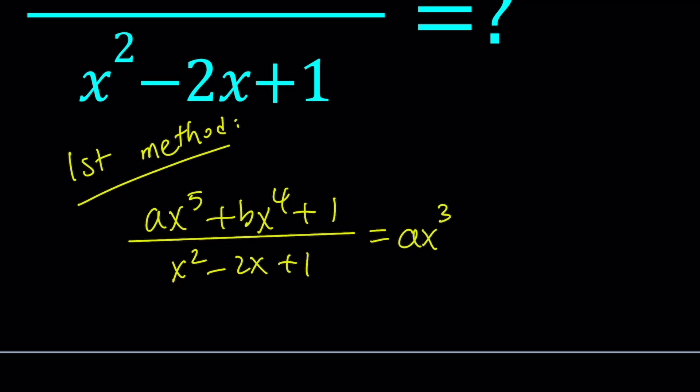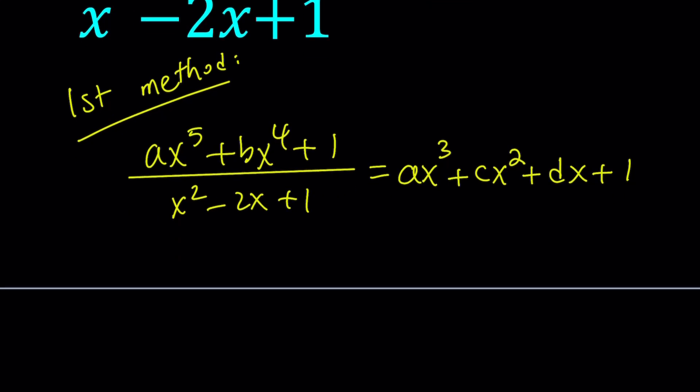Ax cubed, because I need to get ax to the fifth when I multiply by x squared. So it's kind of like a conclusion or the result that comes from long division. The third method could be long division, but it takes a long time. Then I'll continue with cx squared because b was used, and then I have a dx, and then finally I'm going to end up with 1 because 1 times 1 equals 1.